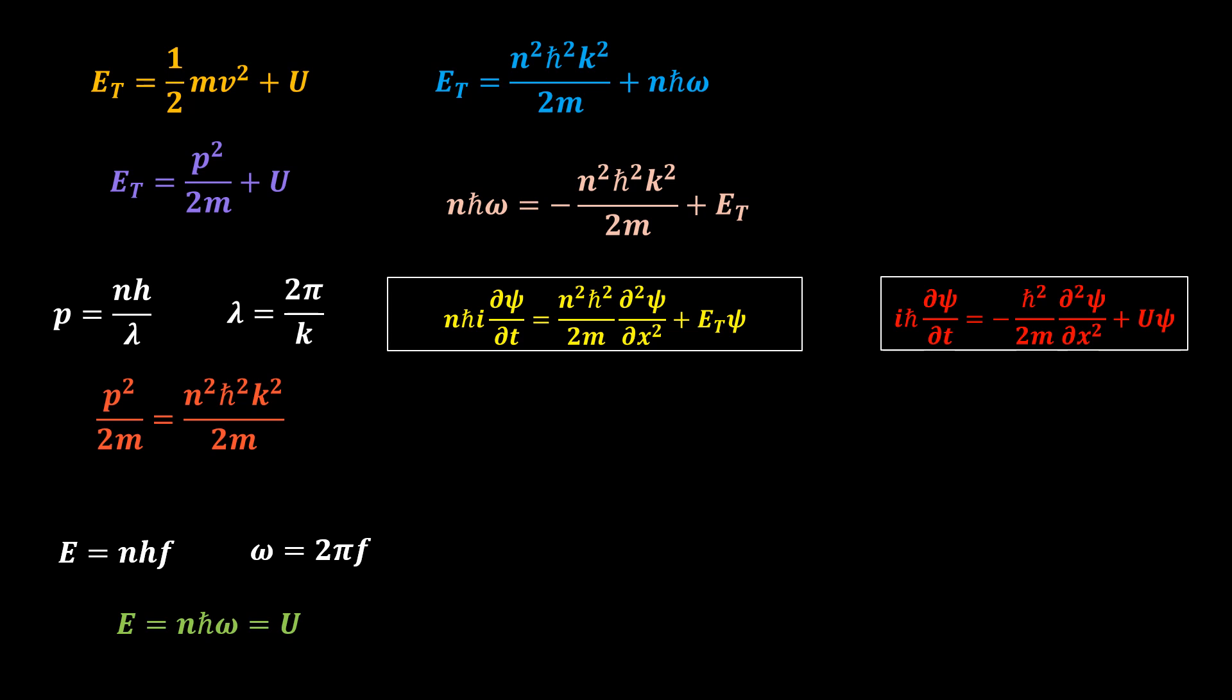Firstly, the presence of the n terms in the equation. Secondly, the absence of the negative sign on the kinetic energy term. And thirdly, the positions of the potential energy terms have been swapped.